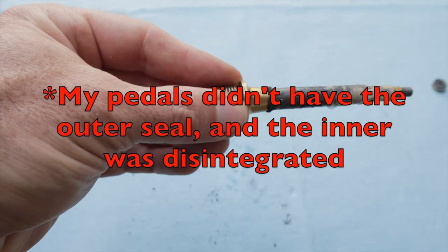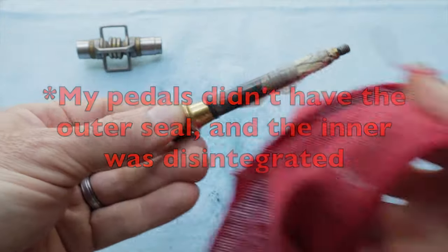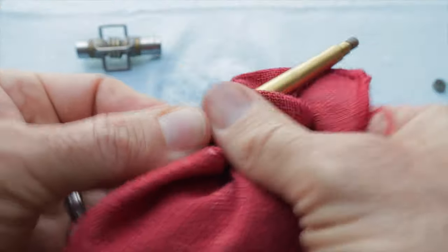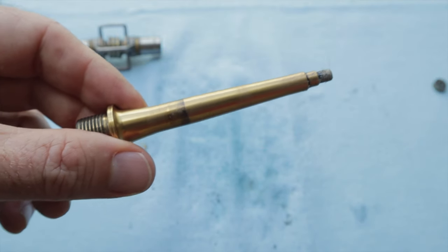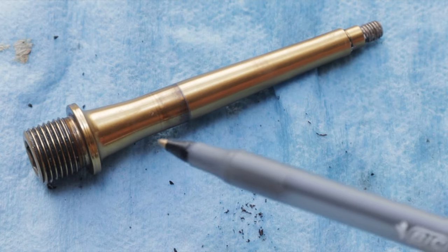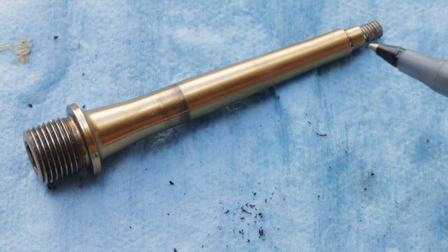Pedals made before 2015 didn't come with these seals, so you might not have them. Now is also a good time to inspect your spindle for pitting, scoring, or other damage, and to give it a nice cleaning with some degreaser and a rag or paper towels. If your spindle is badly pitted or scored, you might be better off replacing it. The last thing you want is your spindle snapping off while bikepacking. If this happens, there's not much you can do other than hike your bike out.